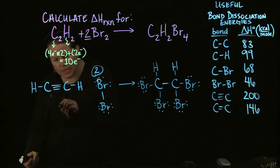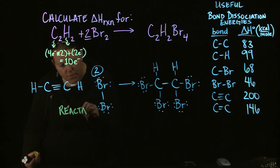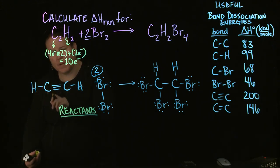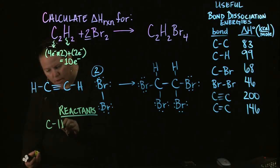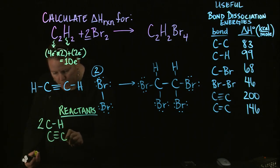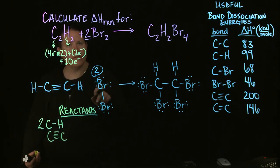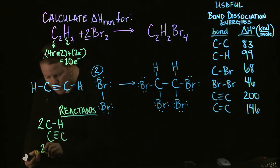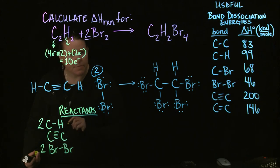Okay, so here's what we got. In terms of the reactants, that's this side, right? Reactants. I have carbon to hydrogen bonds. And notice I have one here and one here, so I have two of those, right? I have one carbon triple bonded to carbon bond. And I have two bromine singly bonded to bromine bonds.